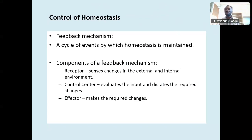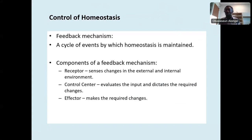The receptor senses changes in the external and internal environment. Think about yourself — your receptor would be like the skin feeling that temperature is high. How does the body know that the temperature is high? Your brain works with the skin: the skin feels the temperature, and immediately the message goes to the brain. The receptor is the one that detects the changes. The control center is the one that evaluates the input from the receptor and determines the required changes — that's the brain, specifically the hypothalamus. The control center will always be the hypothalamus.